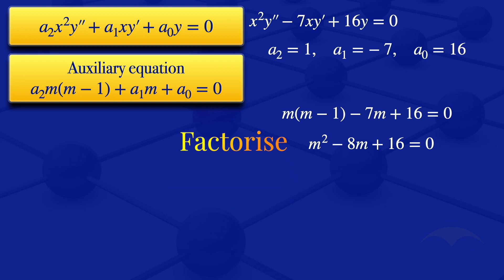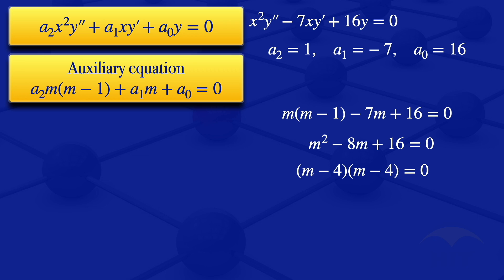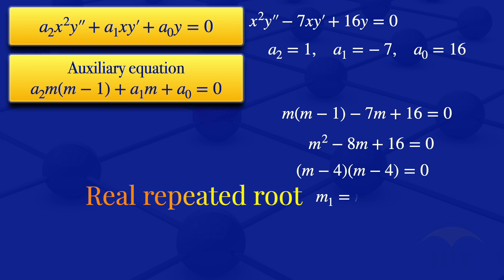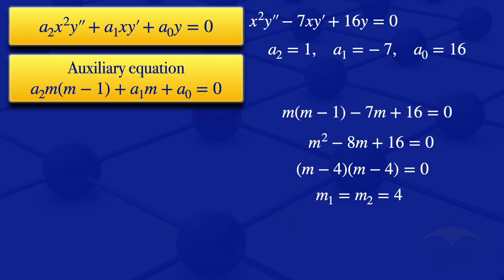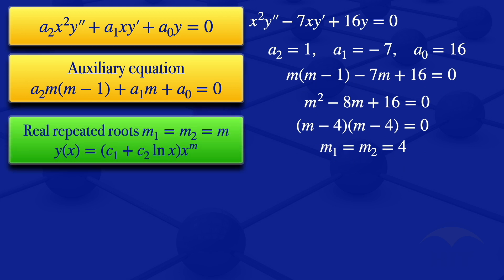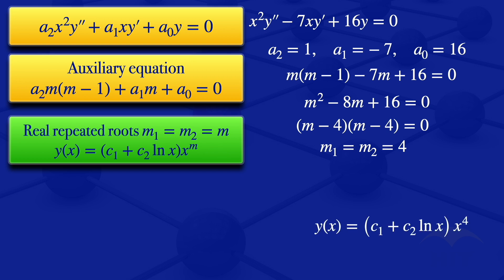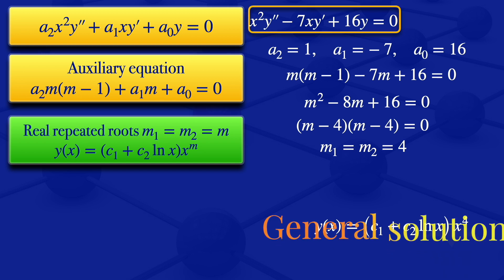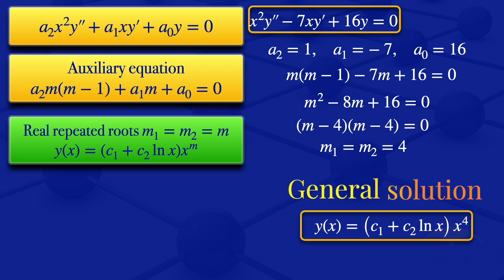Factorizing m squared minus 8m plus 16, we look for numbers that multiply to 16 and add to minus 8. The equation becomes (m minus 4)(m minus 4) equals 0, giving a repeated root: m1 equals m2 equals 4. For real repeated roots, the general solution is y equals (c1 plus c2 ln x) times x to the power m. Substituting m equals 4, the general solution is y equals (c1 plus c2 ln x) times x to the power 4.